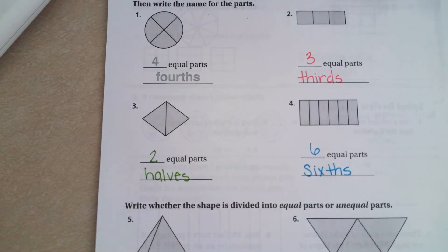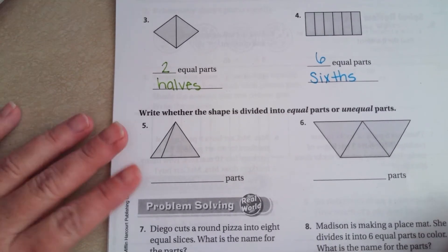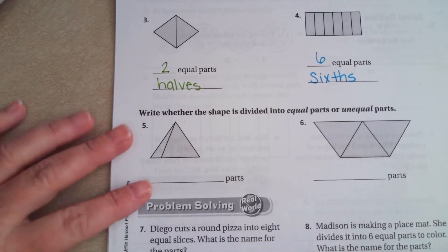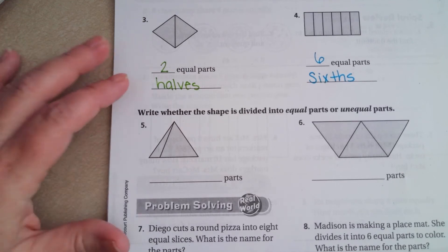Now, they want us to know whether the parts are divided into equal parts or unequal parts. So, equal means like when you cut a sandwich directly in half. It means there's two parts. They're the same size, roughly the same shape. They're exactly equal.